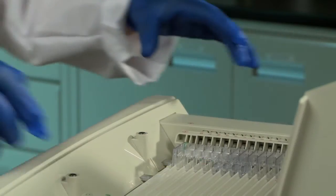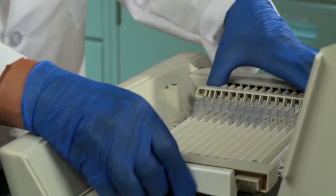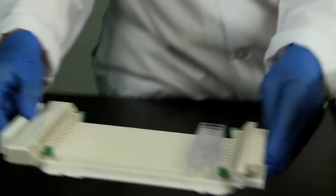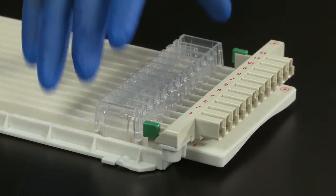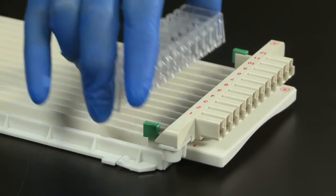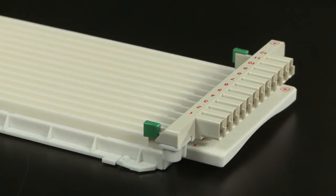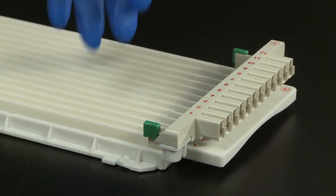After the run is finished, the tray can be removed by sliding it away from the electrodes and lifting it out of the instrument. Remove the cup holder and then the electrodes can be removed from the tray by pinching the green tabs and lifting up.